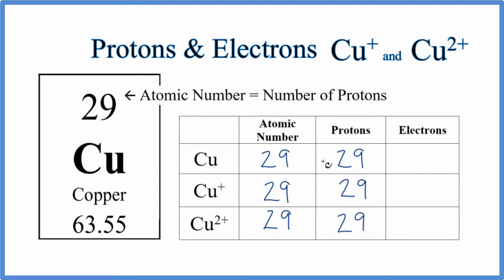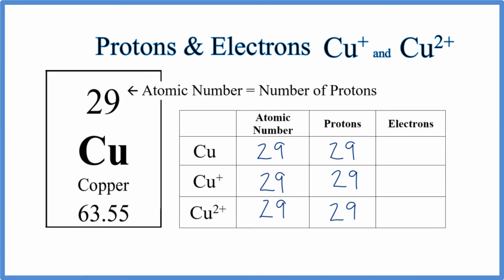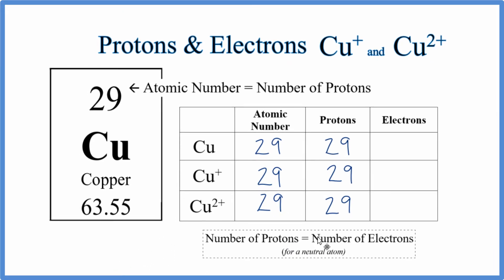The electrons, though, we need to look at. In a neutral atom, a neutral element, the number of protons equals the number of electrons. So for neutral copper, protons equals electrons, 29.